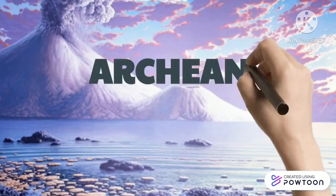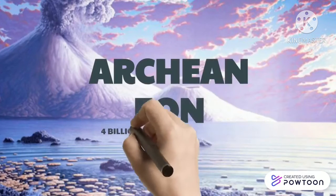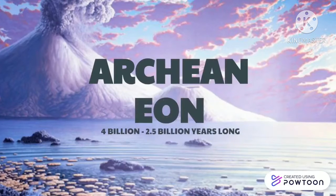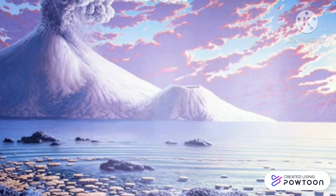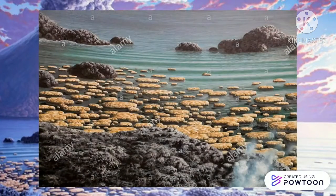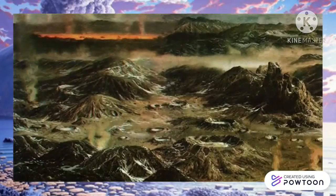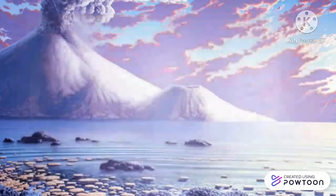Next is the Archean Eon, beginning from 4 billion to 2.5 billion years ago. Records of Earth's primitive atmosphere and ocean emerged in the earliest Archean. During the Archean Eon, there was no oxygen, and living cells did not need oxygen to live. Instead, they made energy out of sulfur and other elements. 2.7 billion years ago, cyanobacteria flourished in Earth's oceans. They made free oxygen from carbon dioxide, water, and sunlight — the process called photosynthesis.